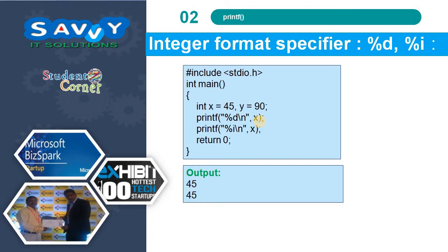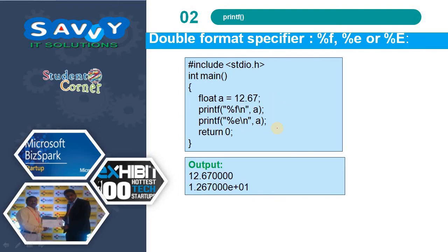For integers, x equal to 45 and y equal to 90 — %d prints the integer value, and %i also accepts an integer value. For the double format specifier, we use %f, %e, and %E. Taking a double value, these specifiers will print the value in different formats.